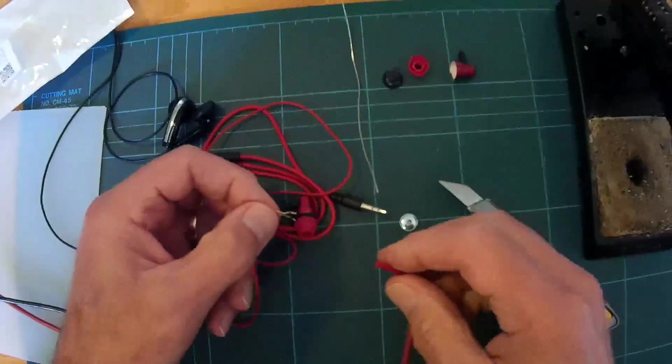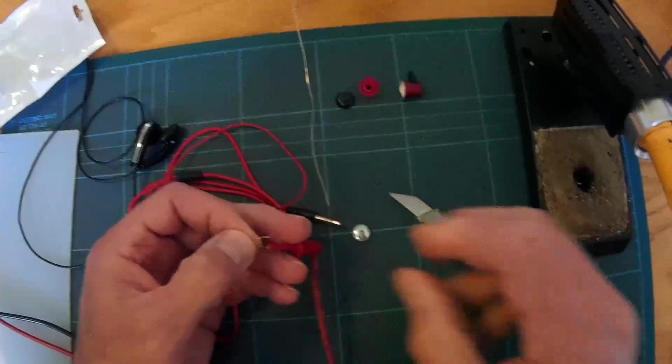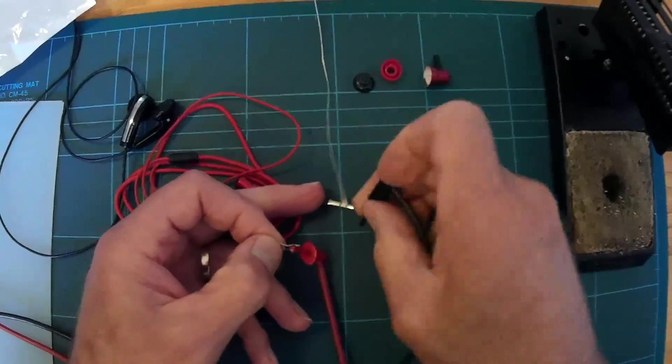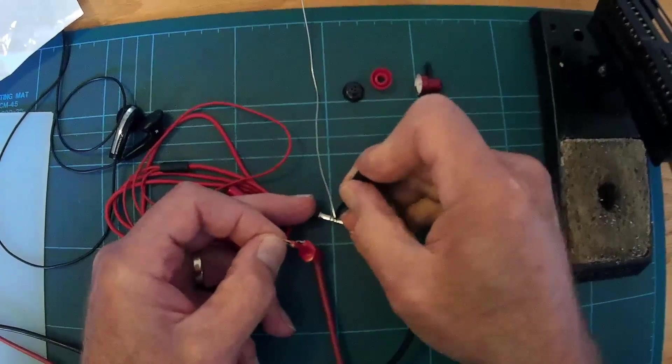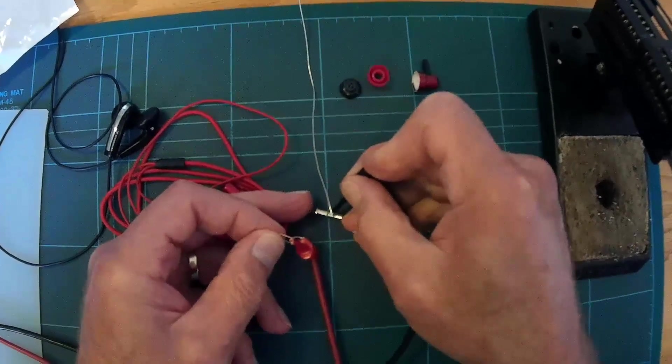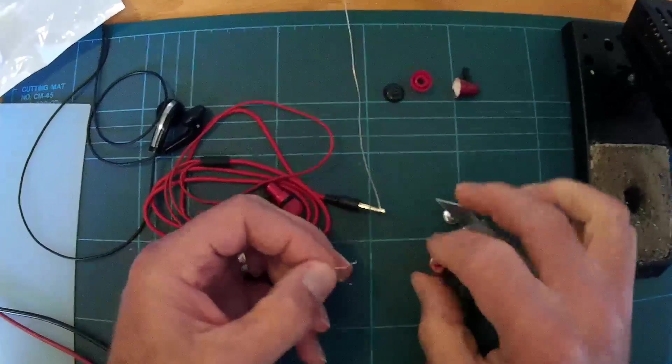Right, okay, now the next thing is to see whether this is left or right. So we'll pull that onto this green lead, which I think is quite often left, which is the tip. And it's the other way around on this. Right, okay, so this is the right. It's that middle ring. So that's the ground, and that's the right.